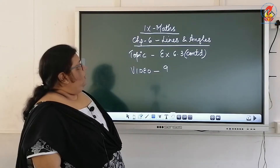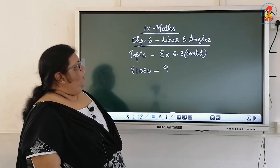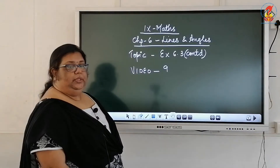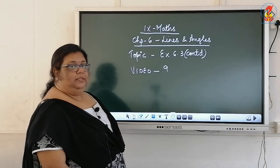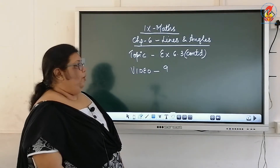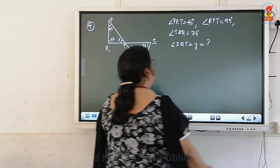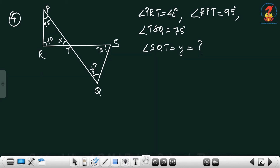We will continue with our topic, exercise 6.3. We finish doing 3 problems. The next problem has a figure. You can see one triangle PRT and another triangle TQS.